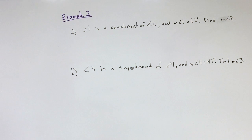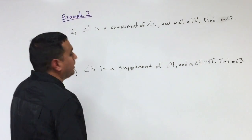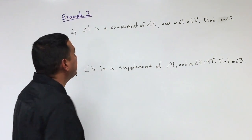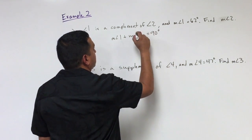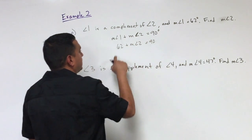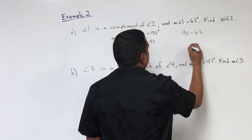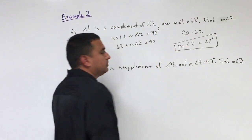Example two, part A: angle one is a complement of angle two, and the measure of angle one is 62 degrees. Find the measure of angle two. Since they're complementary, the measure of angle one plus the measure of angle two must equal 90 degrees. Substituting 62 in: 62 plus something equals 90, so I subtract — 90 minus 62 — and the measure of angle two is 28 degrees.